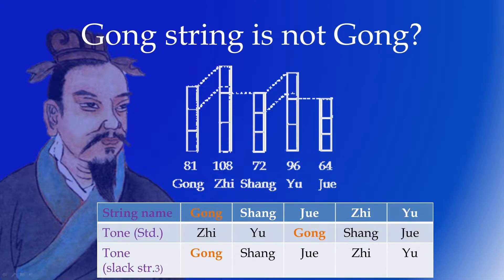Is it possible to have the tones match with the string names then? Well, that's what Huang Zhong tuning is for, by slackening the third string by one lu. But why is the third string considered the standard instead of the first? The answer gets a little complicated. So let's explain the problem back on standard tuning as we know it first.